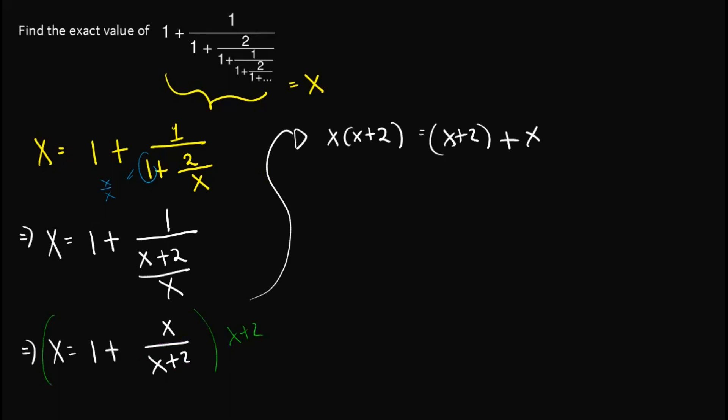And then simplifying this would give us x squared plus 2x equals 2x plus 2. And then subtracting 2x both sides would give us x squared equals 2.